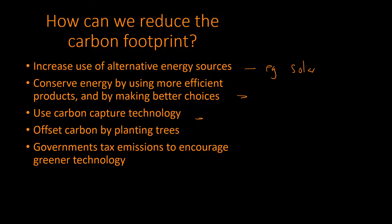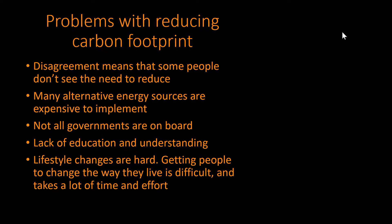Carbon capture technology is where CO2 that is emitted is then trapped and stored somewhere, which reduces the amount of CO2 released into the environment and reduces the carbon footprint. Offsetting carbon — planting more trees means they will be taking in CO2 for photosynthesis. Finally, governments can tax emissions to encourage greener technology. If governments put higher taxes on heavily polluting energy resources and products, companies have an incentive to invest in greener technologies, leading to widespread adoption.